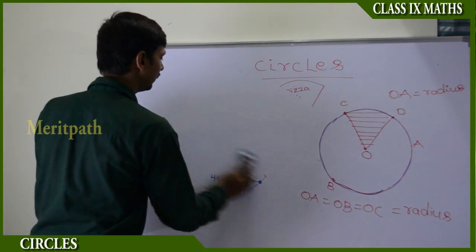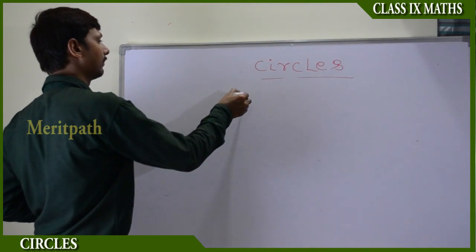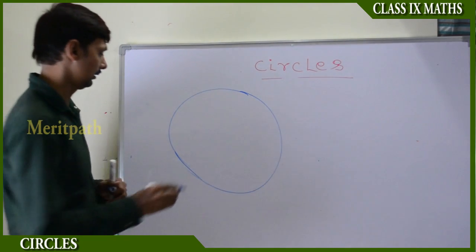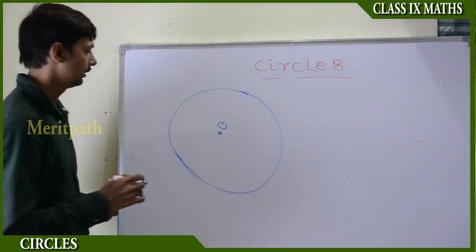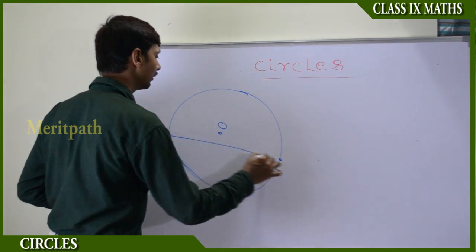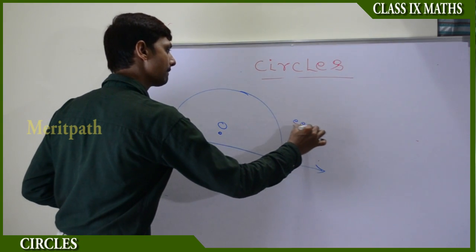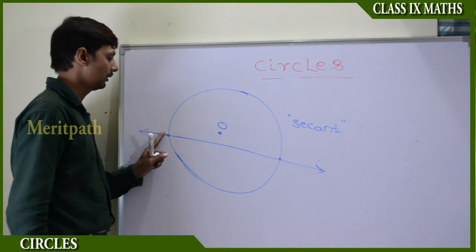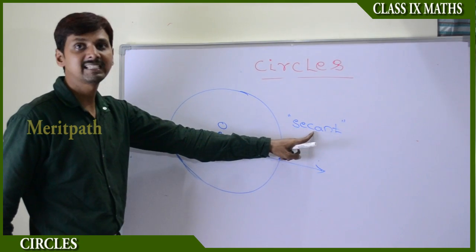Let us take a circle, take any two points from the circle, and join these two points. This is called a chord of the circle. Let us recall: we have taken any two points from the circle and joined them — we call it a chord (secant) of the circle.